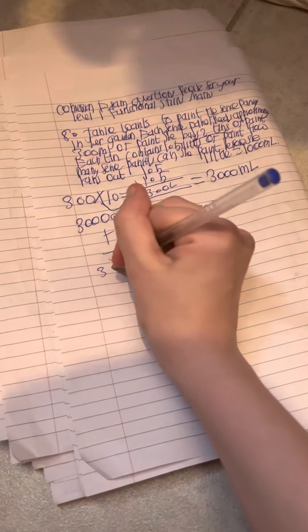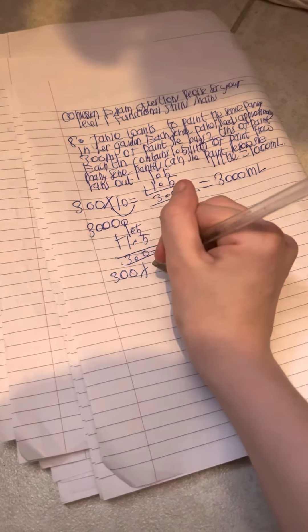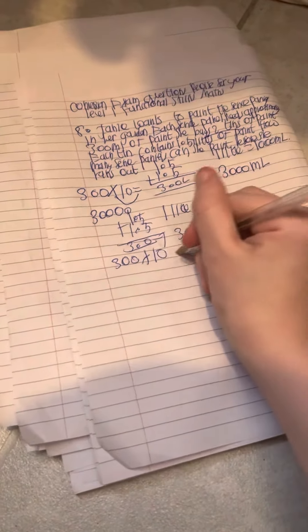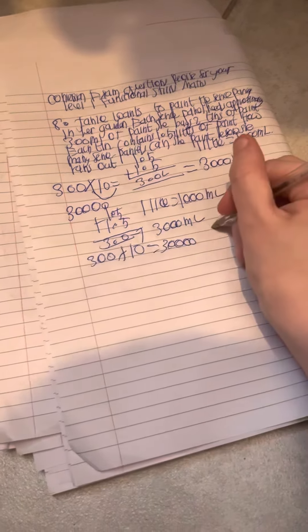So if we do 300 times 10, you add in the zeros and that gives us 3000. So the answer is going to be 10.